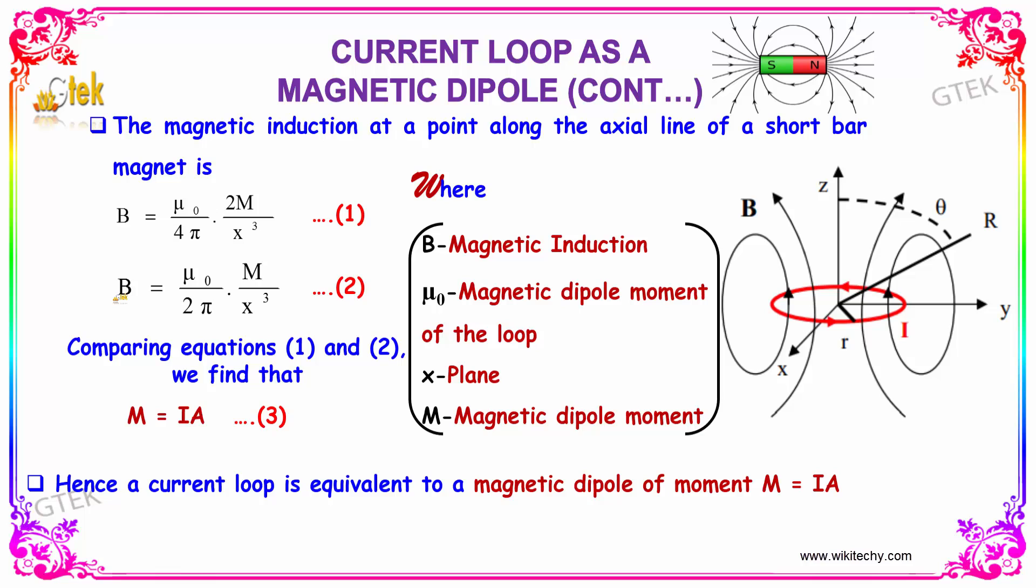Tallying this one, you will be getting μ₀/2π times m divided by x³. So striking out the 2 here, comparing equations 1 and 2, we will be finding that m equals iA.